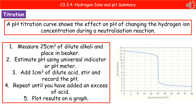The last thing we're going to look at is a pH titration curve. A pH titration curve shows the effect on pH of changing the hydrogen ion concentration when we carry out a neutralization reaction. We start by measuring 25 cm³ of our dilute alkali and place it into a beaker, then estimate its pH using universal indicator or a pH meter. We then add one cm³ of our dilute acid, give it a stir to make sure it's all distributed, and record the pH. You repeat that all the way through until you've got an excess of acid — until it reaches an acidic pH.